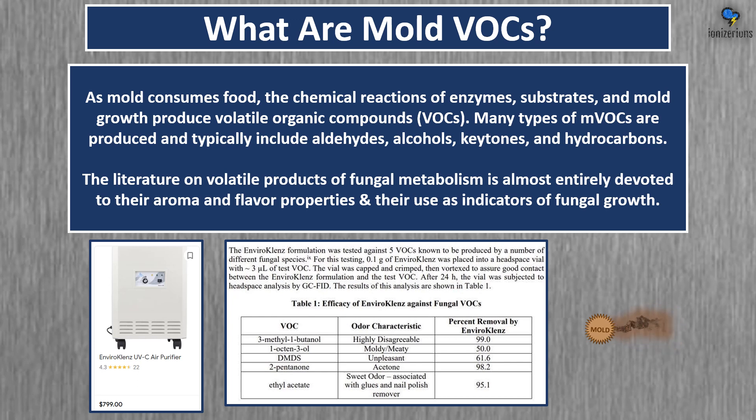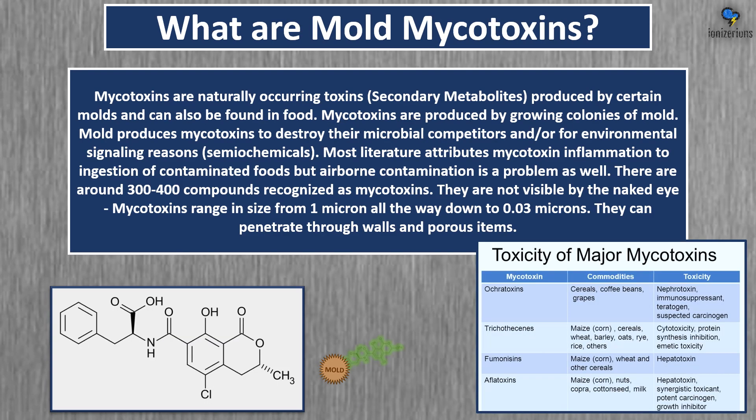Mycotoxins are naturally occurring toxins produced by certain molds and can also be found in food. They are produced by growing colonies of mold to destroy microbial competitors and for environmental signaling. There are around 300 to 400 compounds recognized as mycotoxins. They are not visible to the naked eye and range in size from one micron down to three hundredths of a micron. They can penetrate through walls and porous items.